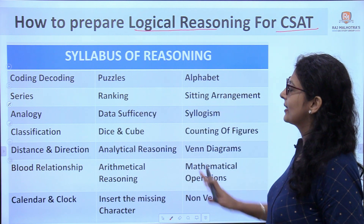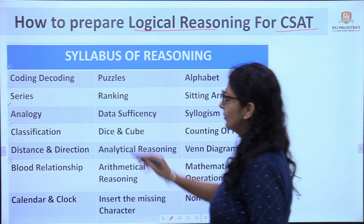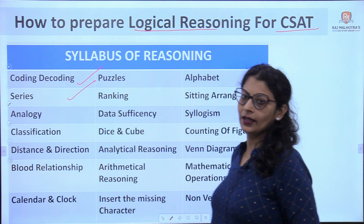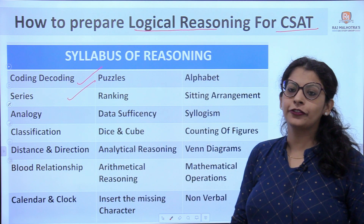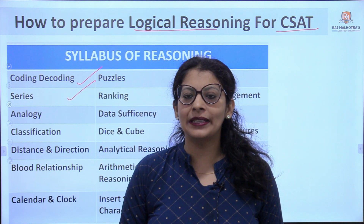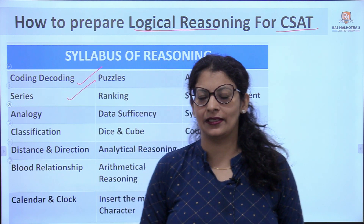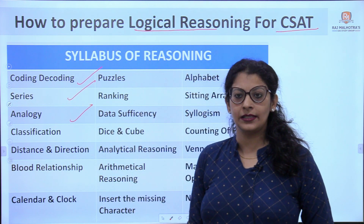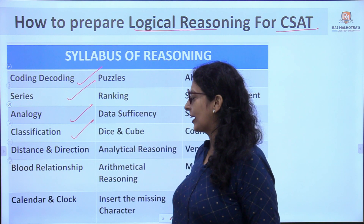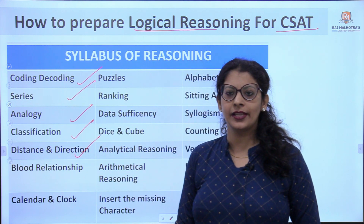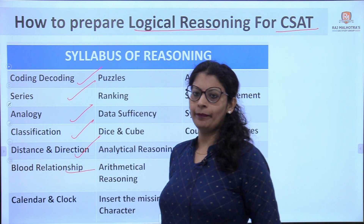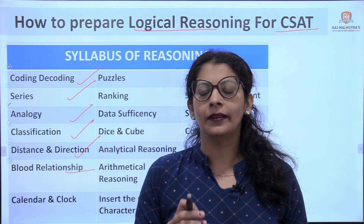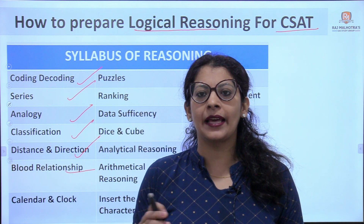The syllabus for CSAT exam includes: Chapter 1 — Coding Decoding; Chapter 2 — Series, which is a combination of three types: number series, alphabet series, and small alphabet series. Next is Analogy — all three types of series are in the syllabus. Then Analogy, Classification, and Distance and Direction.